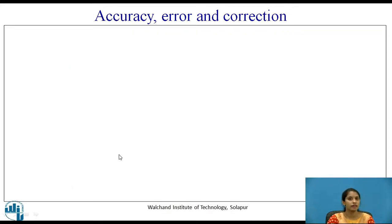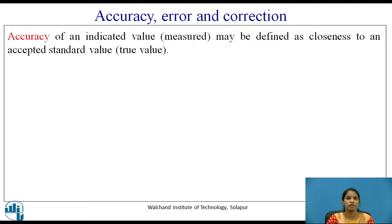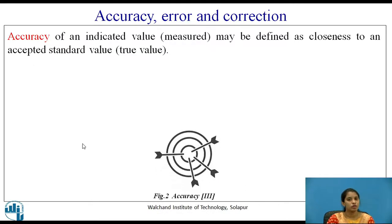Now let us see accuracy. Accuracy is the degree of closeness to the true value or to the standard value. Accuracy of an indicated value may be defined as closeness to an accepted standard value. Figure 2 shows accuracy — in the diagram, all the arrows are struck at the bull's eye, so the shots are known to be accurate.